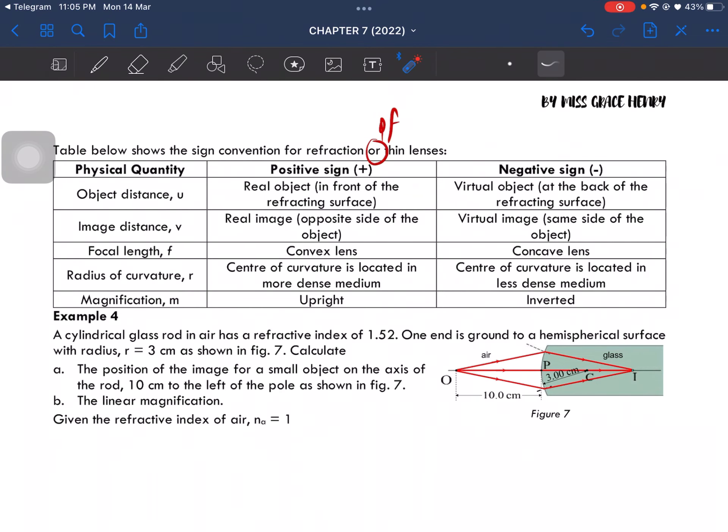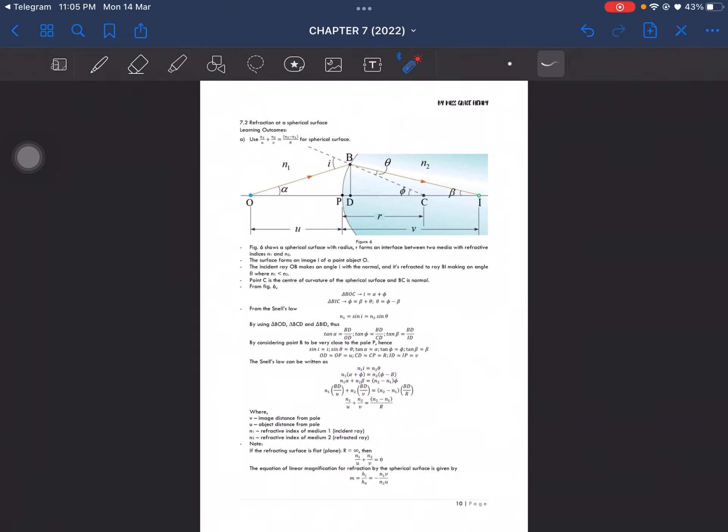And then for magnification, upright is positive and inverted is negative. So that is the theory part of our second subtopic.